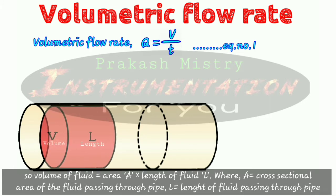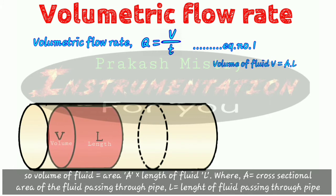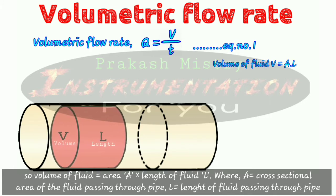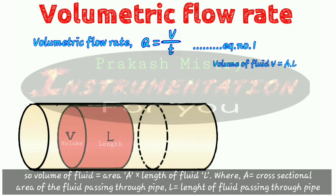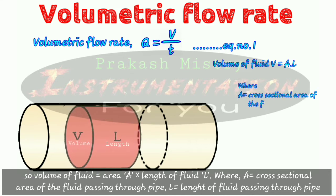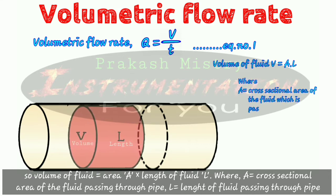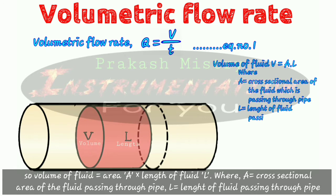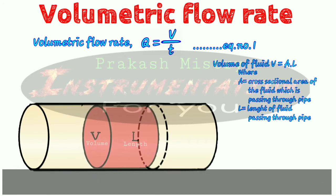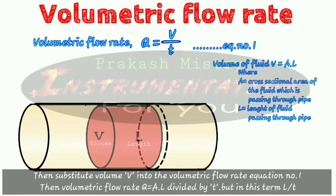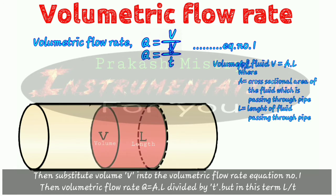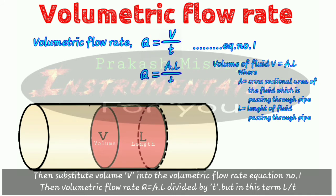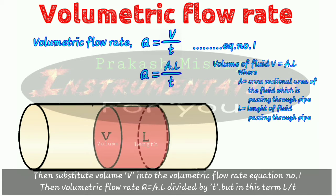So the volume of fluid is equal to area A multiplied by the length of fluid L, where A is equal to the cross section area of the fluid passing through the pipe and L is equal to the length of the fluid passing through the pipe. Substituting volume V into the volumetric flow rate equation one, the volumetric flow rate Q is equal to A times L divided by T.